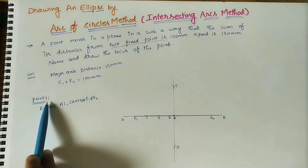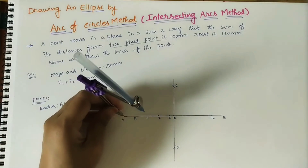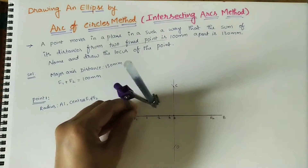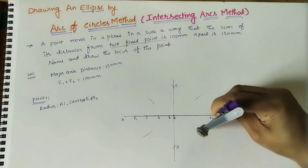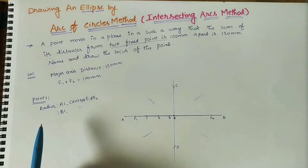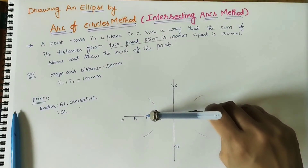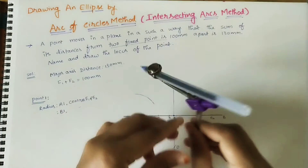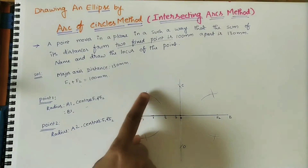After marking these points, take the first point. The radius is A1 (distance from A to point 1) and centers are F1 and F2. With F1 as center and A1 radius, draw an arc on both sides. With the same A1 radius and F2 as center, draw arcs on both sides. Then take radius B1 (distance from B to point 1) with the same centers F1 and F2, and cut the previous arcs. From point 1 we get 4 intersection points.